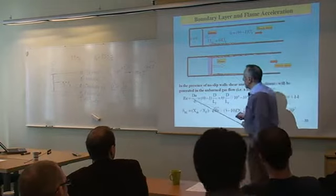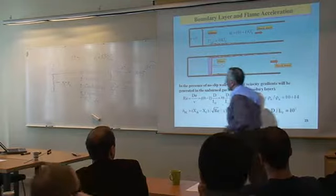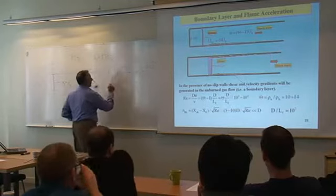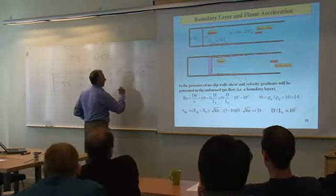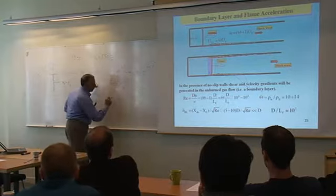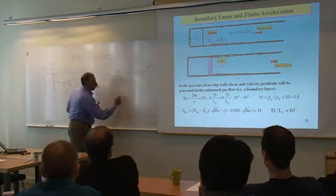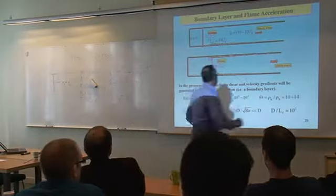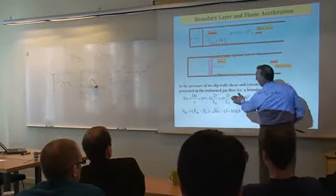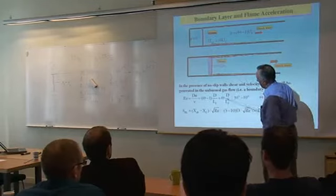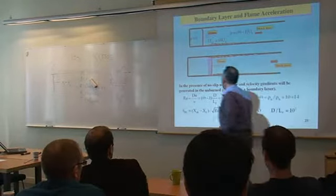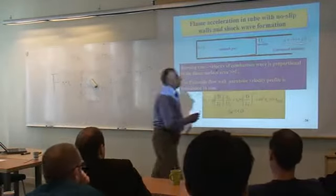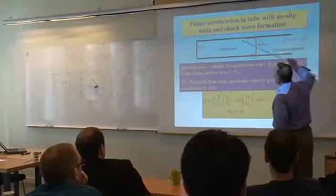The Reynolds number can be rewritten using the relation between the normal velocity of the flame and the kinematic viscosity. For the Reynolds number I have an expression that is the ratio of density times the ratio of the channel width to the flame width. Because the flow ahead of the flame has a parabolic velocity profile shape, the flame will acquire a similar shape.